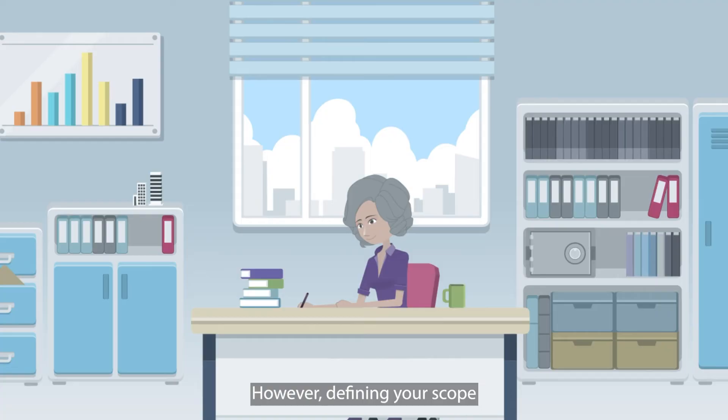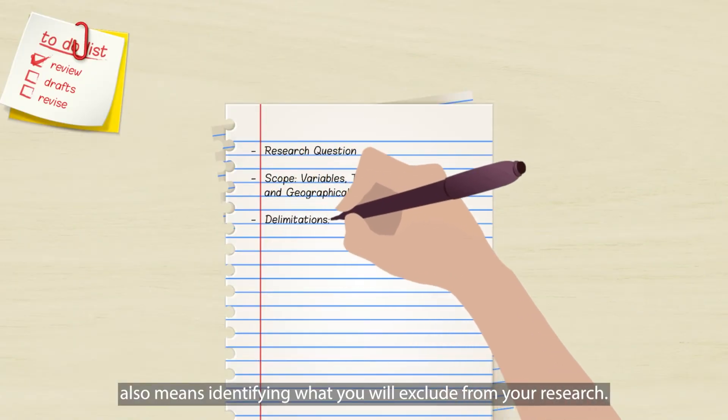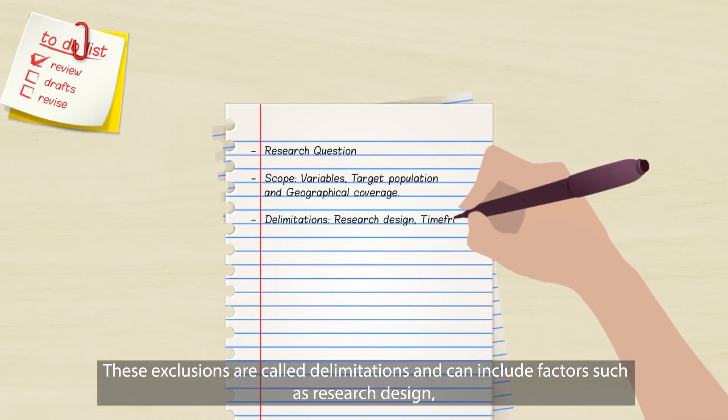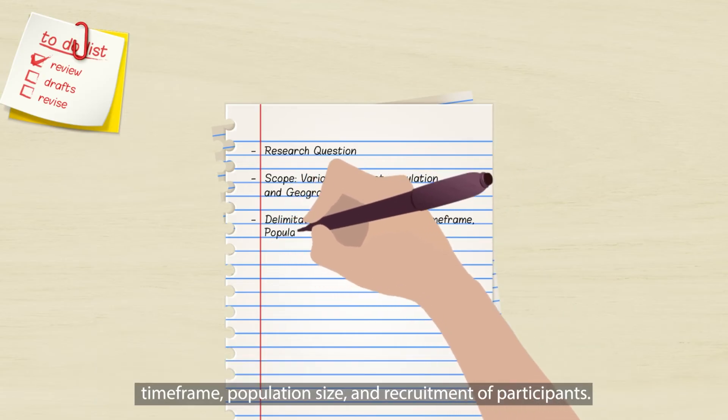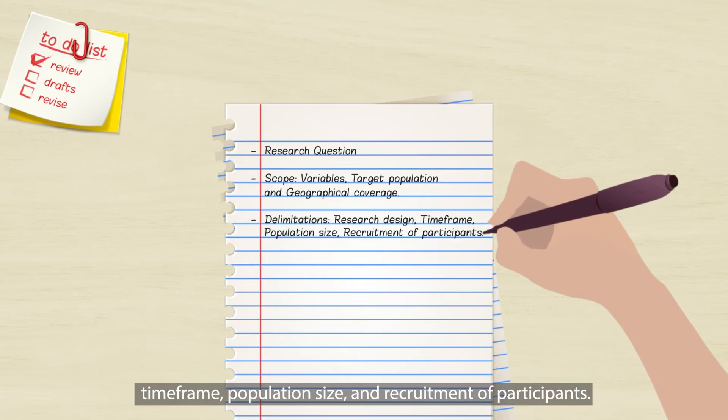However, defining your scope also means identifying what you will exclude from your research. These exclusions are called delimitations and can include factors such as research design, timeframe, population size, and recruitment of participants.